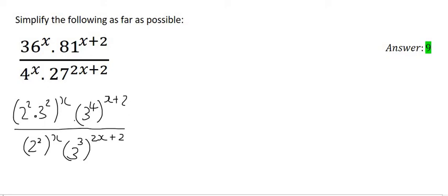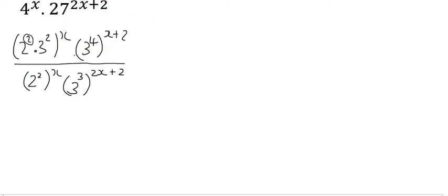Now what we do is, remember, when you have a power on the outside, you multiply. So you've got to do it for the 2 first. That's going to be 2 to the power of 2x and the 3, so that's 3 to the power of 2x.